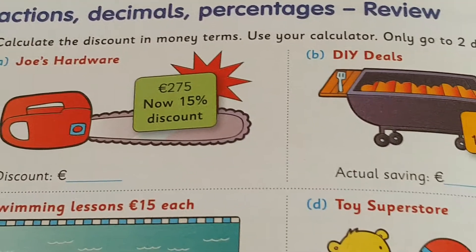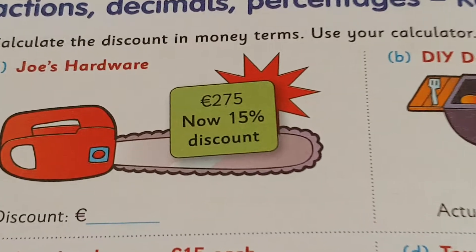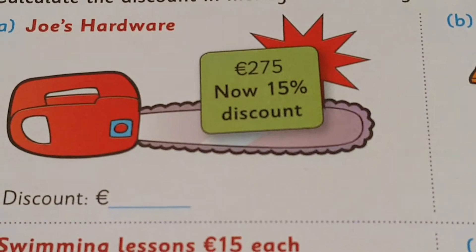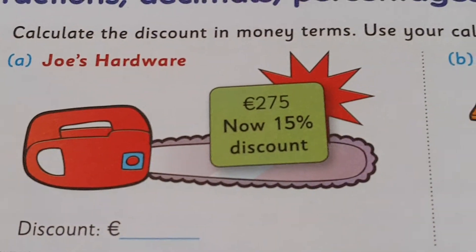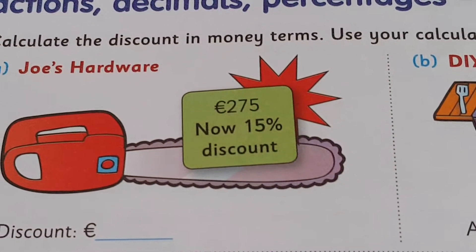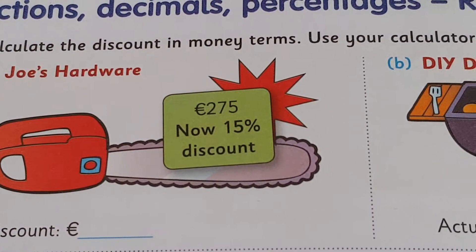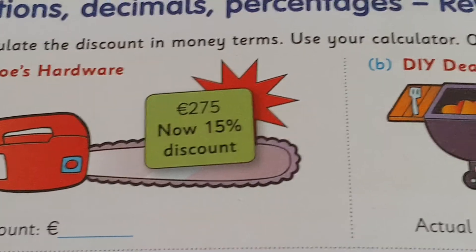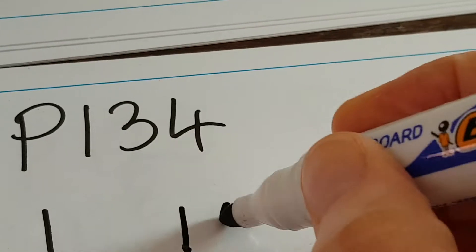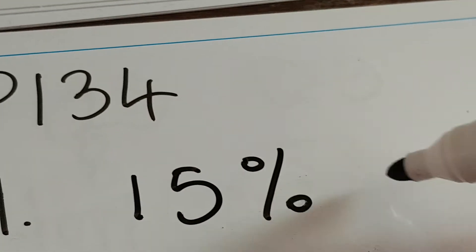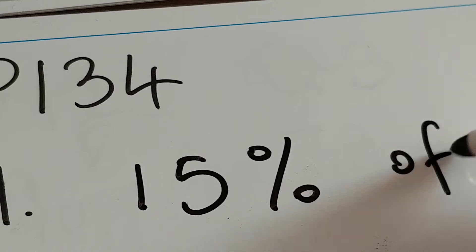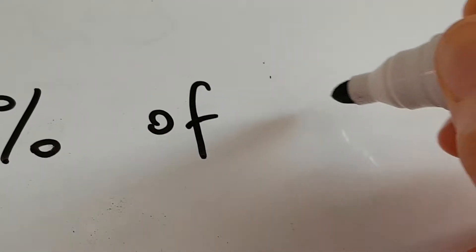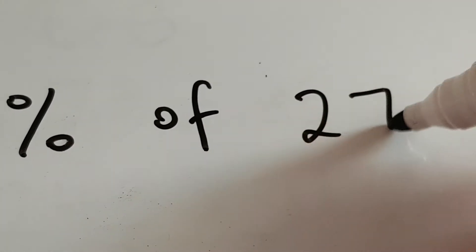Joe's Hardware — spending 275 euro, but there's a 15% discount. So we have to find 15% of 275.